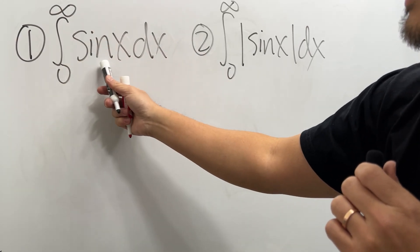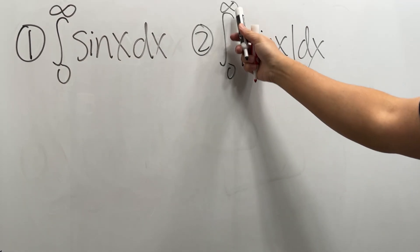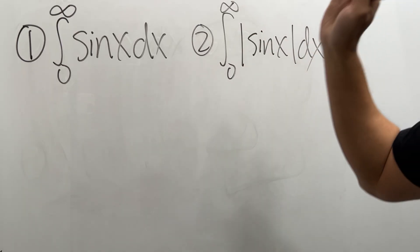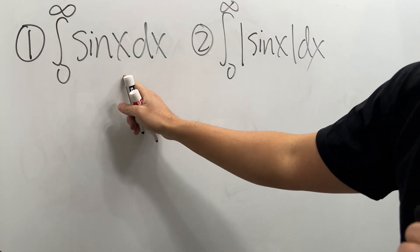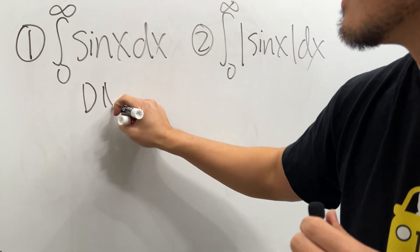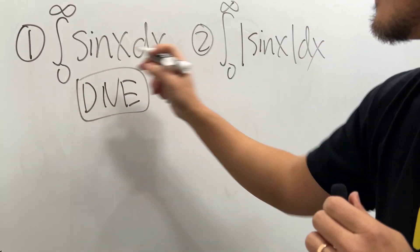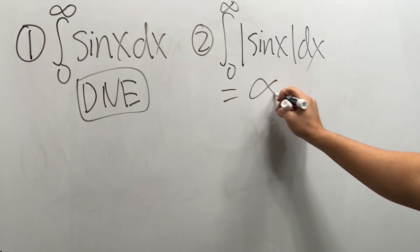What's the integral going from zero to infinity of sine x dx versus the integral going from zero to infinity of absolute value of sine x dx? I'll give you guys five seconds. Five, four, three, two, one. The first one actually doesn't exist and the second one is equal to infinity.